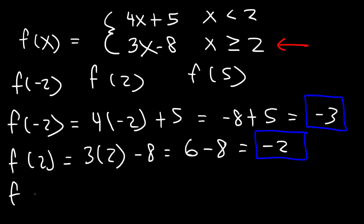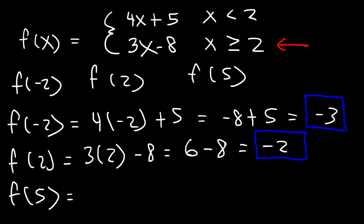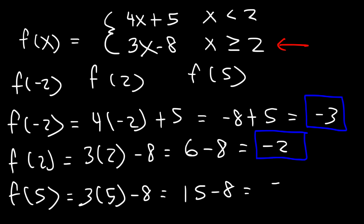Now, what is the function value at 5? 5 is greater than 2, so we need to use 3x minus 8. That's 3 times 5 minus 8. 3 times 5 is 15, and 15 minus 8 is 7. And that's it.